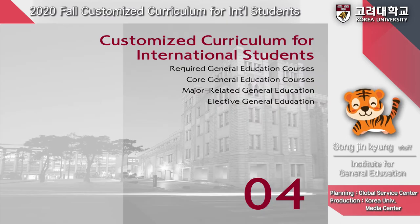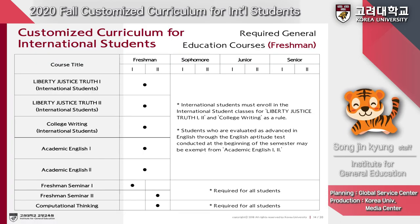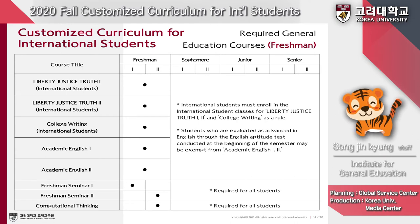Now we'll move on to curriculum. The General Education curriculum at Korea University consists of four major areas: required courses, core general education courses, major-related courses, and elective courses. The curricula for freshmen and transfer students differ, so all students must check the correct courses they need to take for graduation before course enrollment.